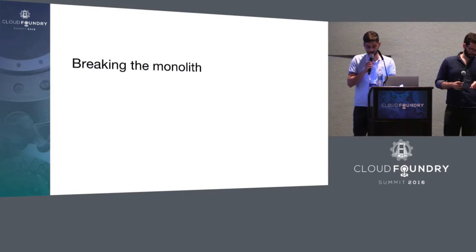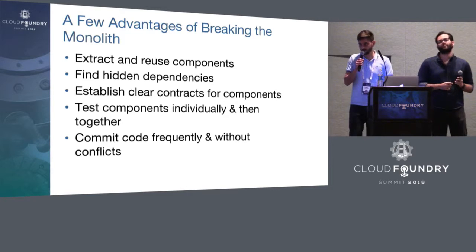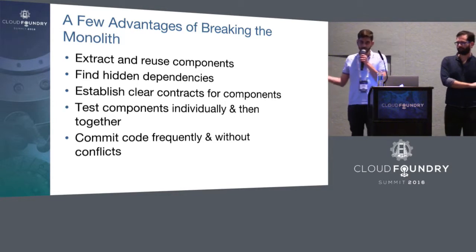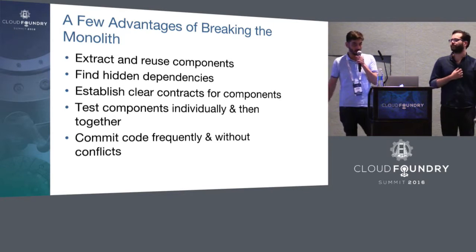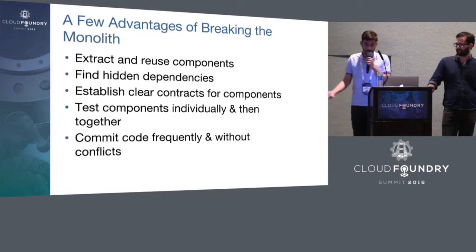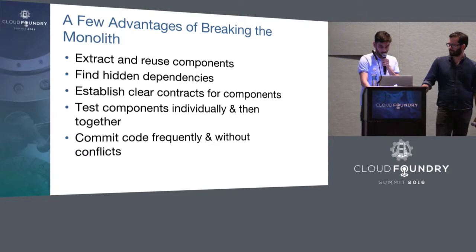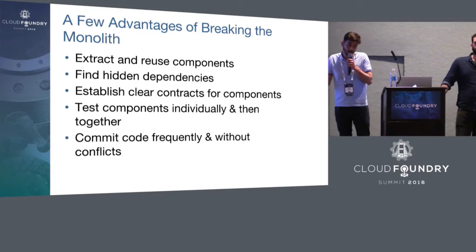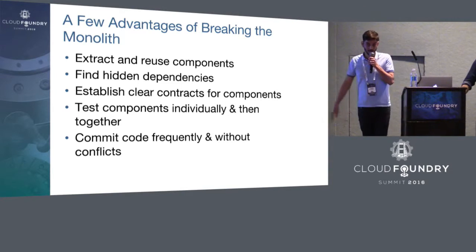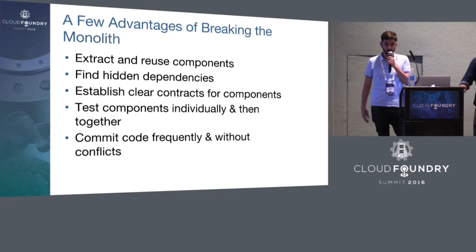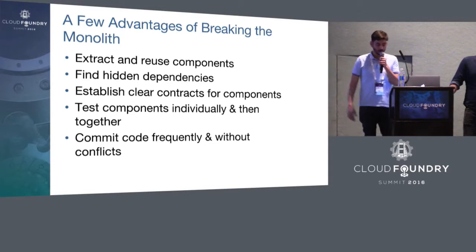Before answering those questions, let's talk about what we gain from breaking up this code base. We can extract components — things many teams were doing the same way, we can pull out and say everybody use this one component for route registration. We can find dependencies, maybe ones we didn't know we had. We can establish contracts for components, so developers only have to worry about whether their release still meets its contract with other releases — just keep your APIs stable. We can test components individually and together, iterate quickly, and work independently without stepping on each other's toes.